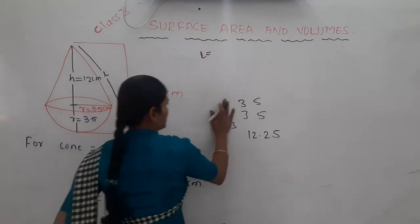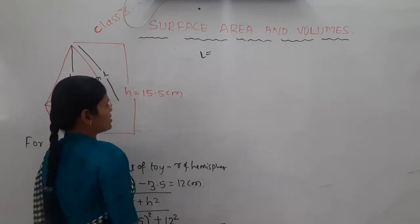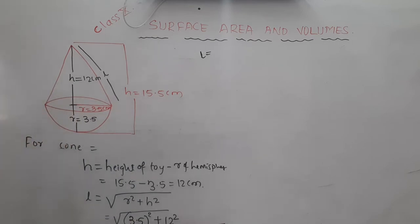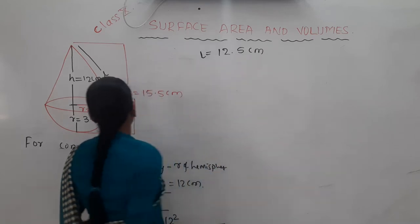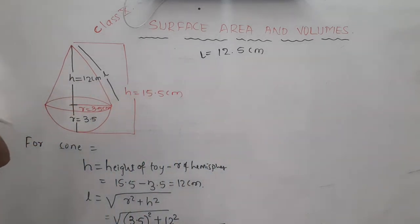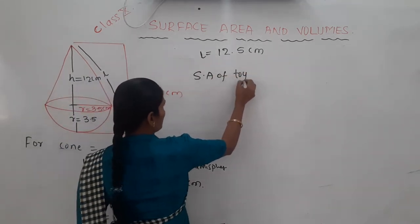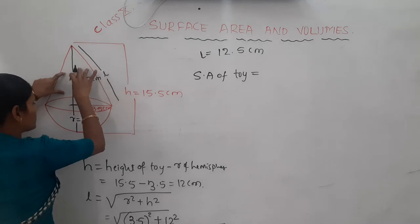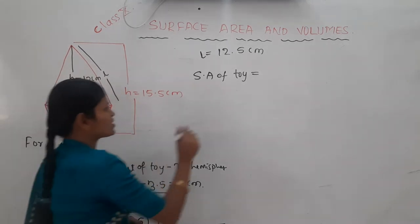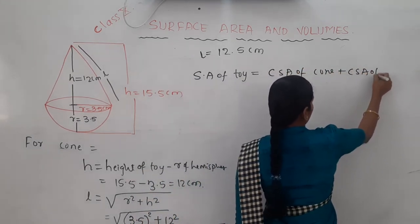The slant length l equals 12.5 centimeters. Now, if we want the total surface area of this toy, we add the curved surface area of the cone and the curved surface area of the hemisphere: CSA of cone plus CSA of hemisphere.